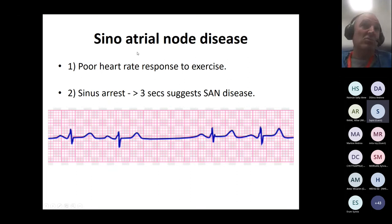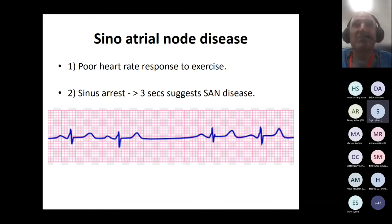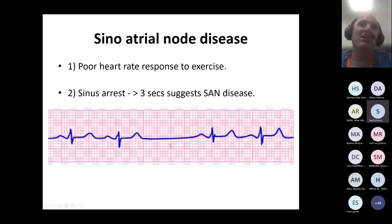Bradycardia from sinoatrial node disease: these patients' heart rate won't increase well with exercise, so they'll often tell you they get tired and breathless going up a hill. On monitoring you'll often see sinus arrest — you see PQRST, PQRST, and then just nothing. The sinoatrial node just didn't fire. This suggests sinoatrial node disease, and if bad enough, it can need pacing.